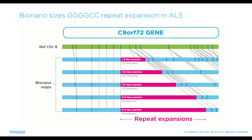Mark Ebert from the Mayo Clinic used BioNano to look at the C9ORF72 gene, which can cause ALS if there's an expansion of a GGGGCC hexanucleotide repeat. This repeat is 100% GC, making these expansions impossible to sequence through. In a single brain biopsy of a patient who died of ALS, BioNano revealed different alleles — different expansions of that repeat from wild type all the way to 32 KB — demonstrating an enormous power to detect mosaicism in the brain.